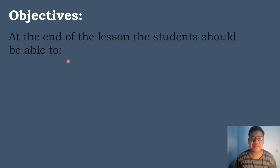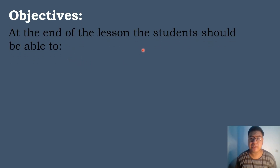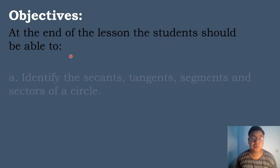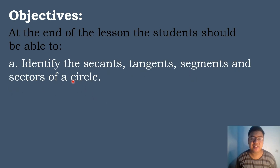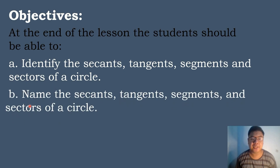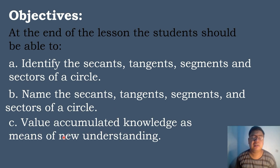Let's have the following objectives in today's topic. At the end of the lesson, the students should be able to: Letter A, identify the secants, tangents, segments, and sectors of a circle. Letter B, name the secants, tangents, segments, and sectors of a circle. And Letter C, value accumulated knowledge as means of new understanding.